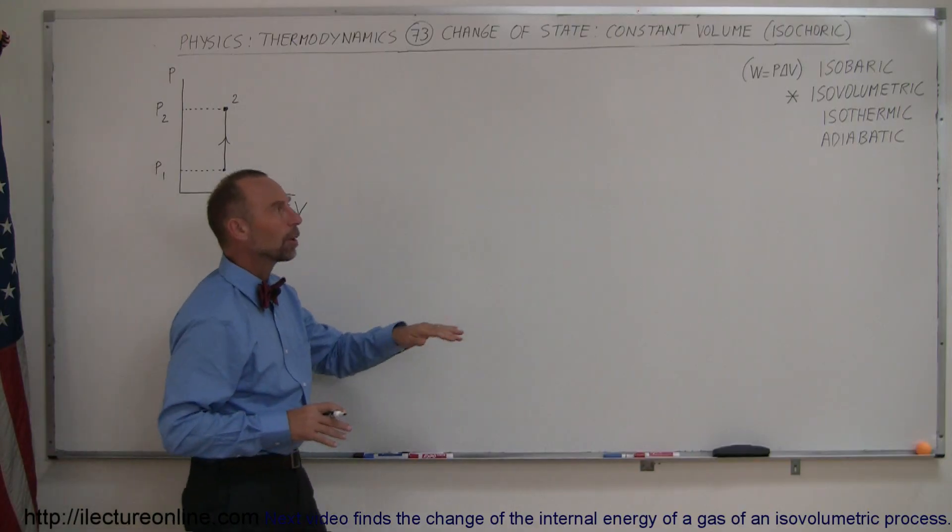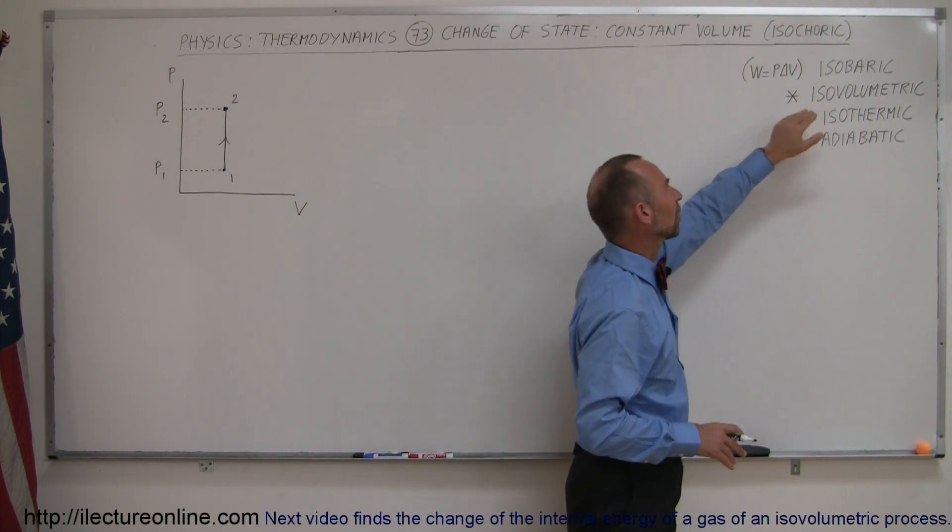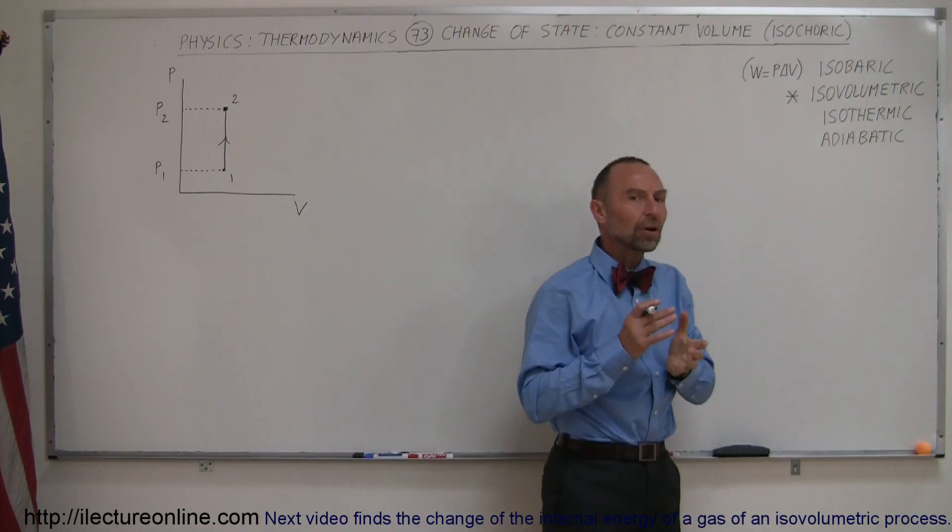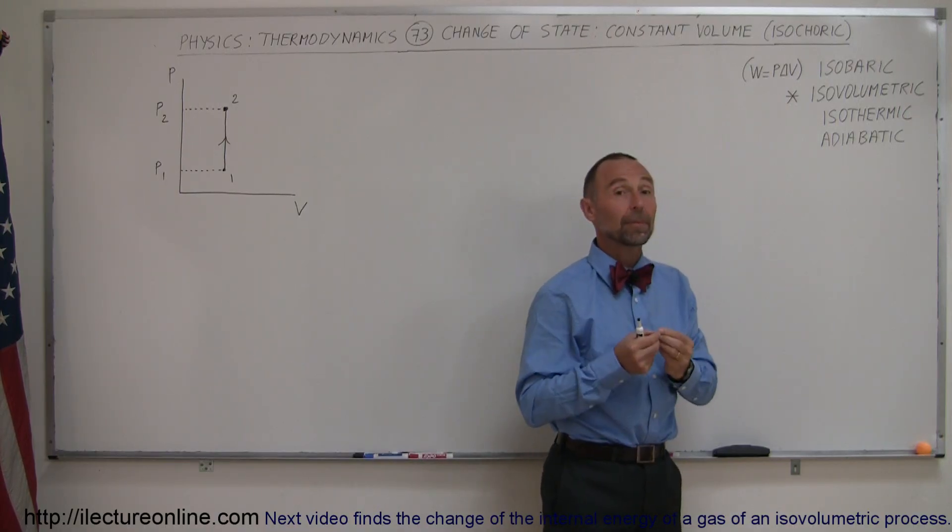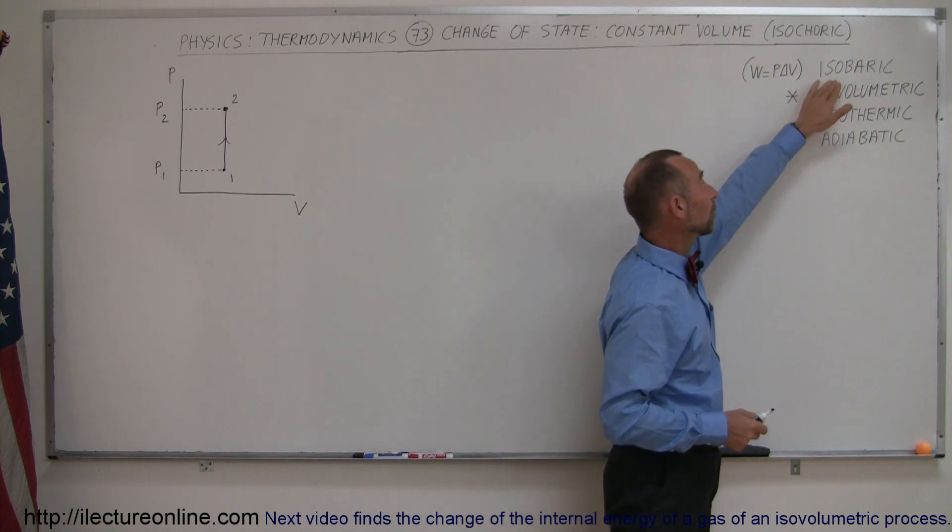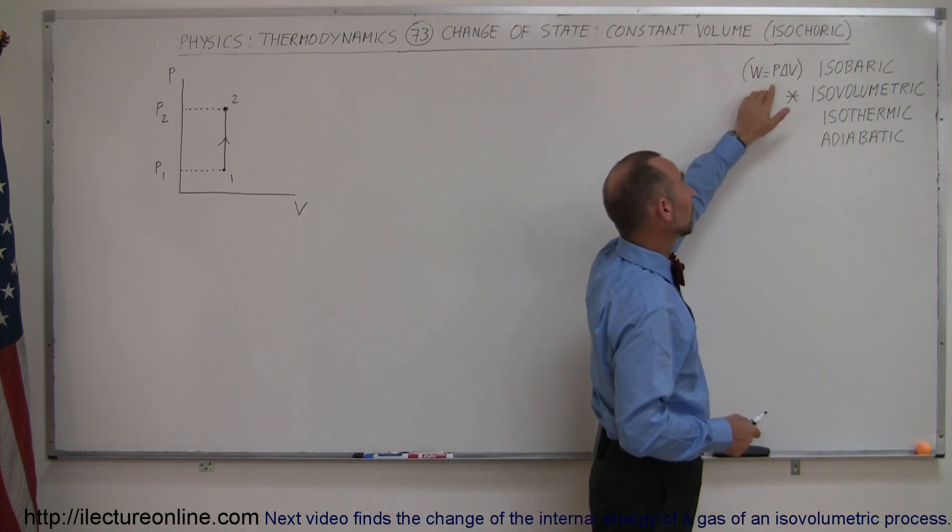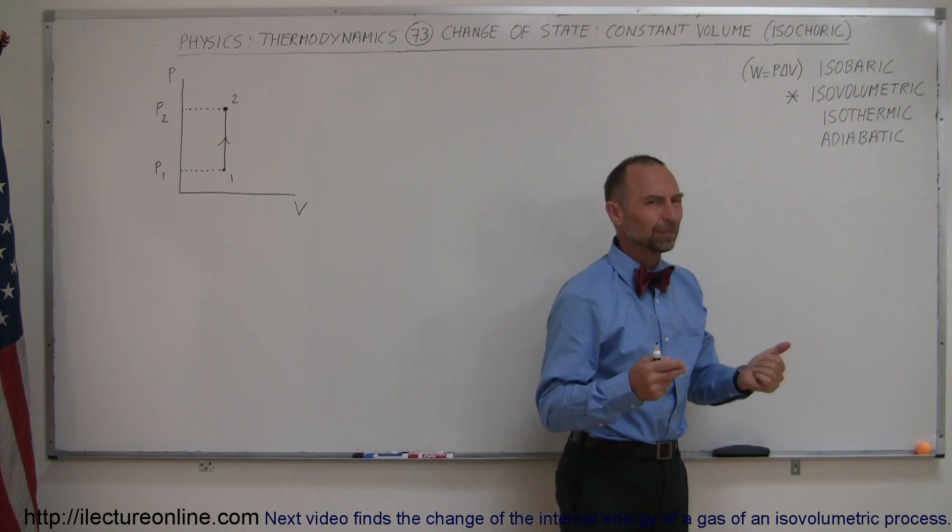Notice what I wrote up here next to the isobaric process, where the pressures stay the same, that each process has kind of a unique identifier and something that's special about it. In the case of an isobaric process, the work is always equal to the pressure times the change in the volume. Easy to remember.